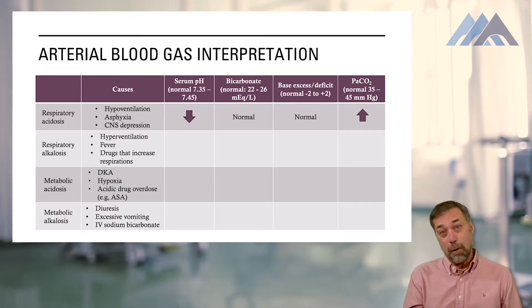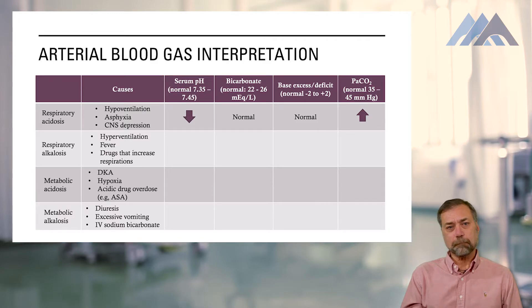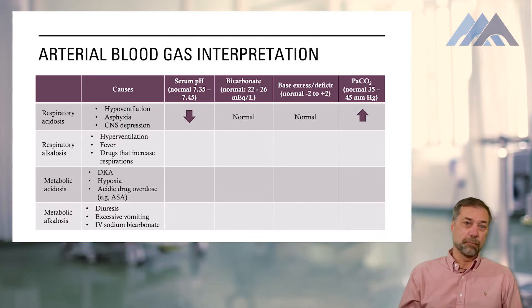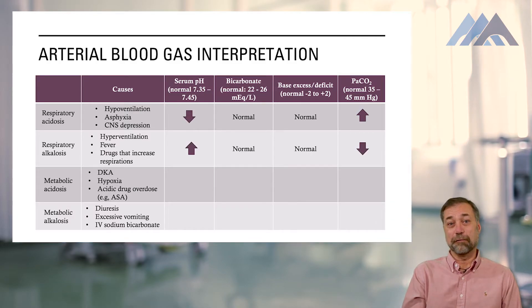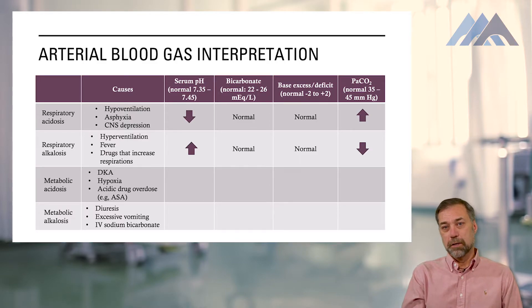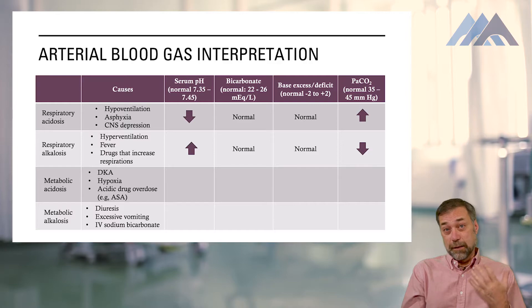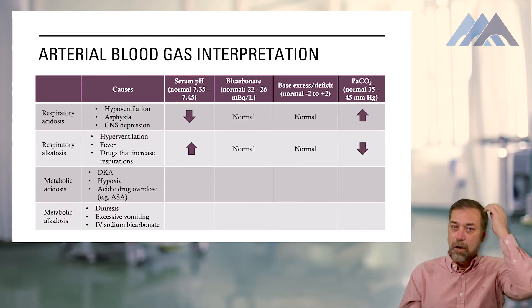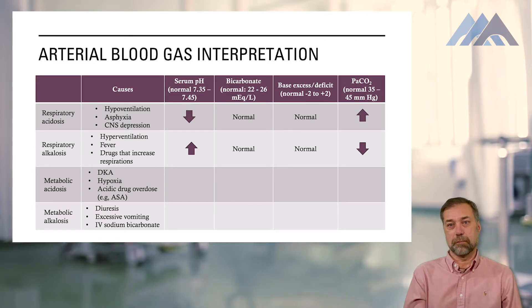What causes respiratory acidosis? Anything that causes retention of CO2: hypoventilation, asphyxia, CNS depression. Respiratory alkalosis is the opposite — the patient blows off CO2, which causes acid to break down and serum pH goes above 7.45. In respiratory alkalosis, the serum pH is high, bicarb and base excess are normal, and CO2 is low. Causes include hyperventilation, fever, or any drugs that cause tachypnea or an increased respiratory drive.